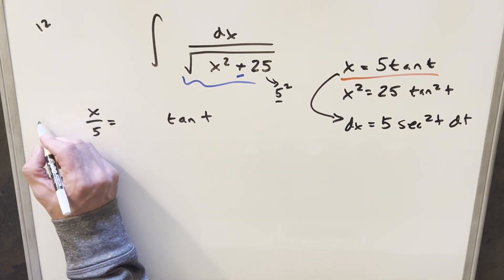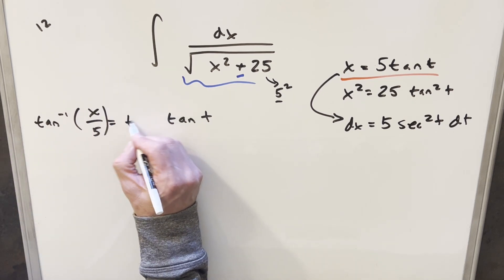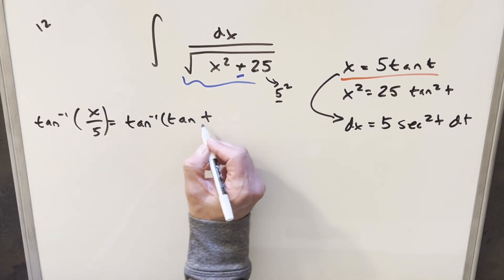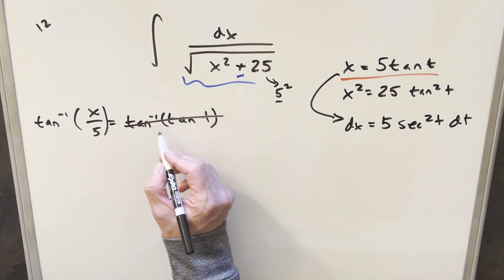And the way we can isolate t is by just taking arctan on both sides here. So we'll get arctan x over 5 here. And then we'll have this expression over here on the right. And then normally how we do this is we just cancel this out. And we'd say this is equal to t.